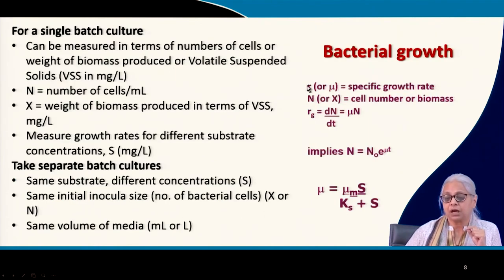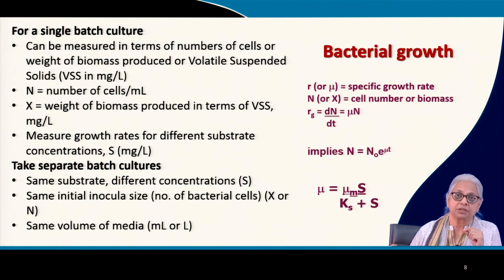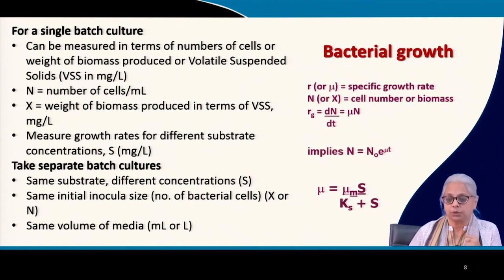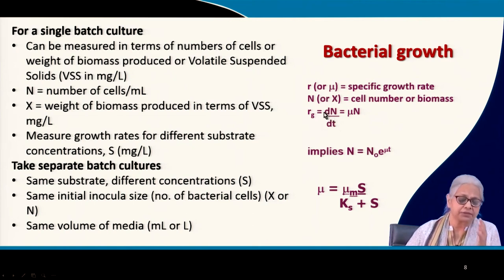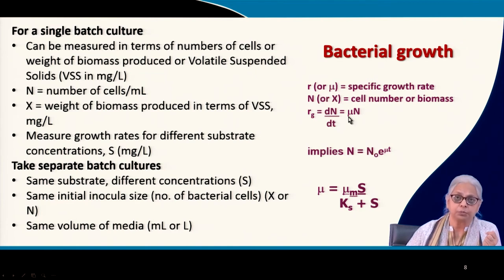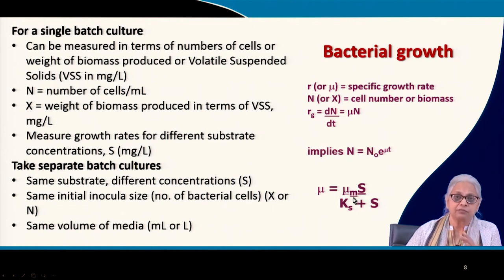What is important in the exponential phase is the slope of each curve. We call the slopes mu1, mu2, mu3, mu4, and mu5. Here, mu (or R) is the specific growth rate for a specific substrate concentration — S1 corresponds to mu1, S2 to mu2, and so on. The growth rate Rg = dN/dt = μN, and when integrated gives N = N0·e^(μt). This μ itself is a function of substrate concentration.